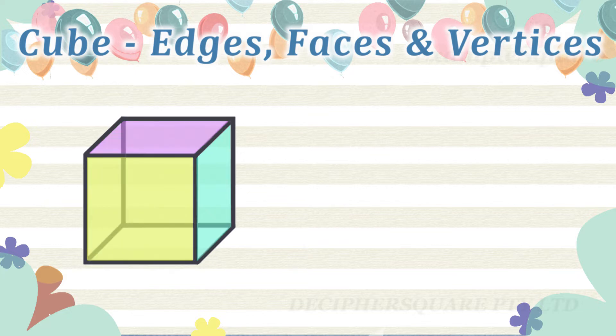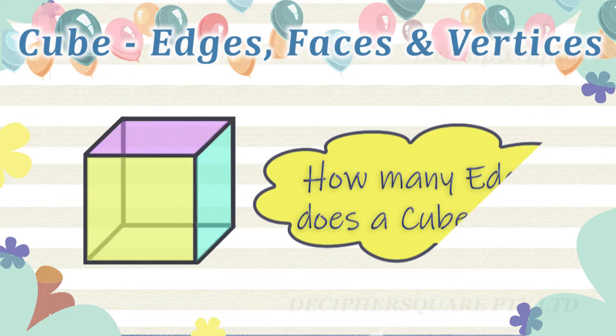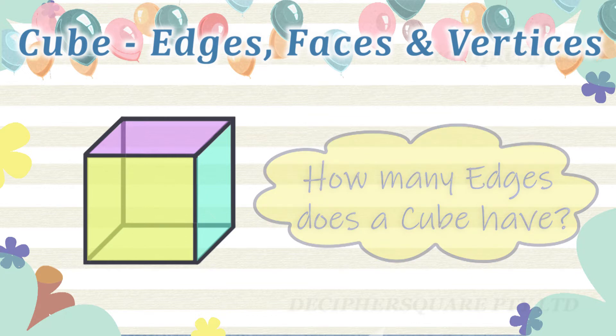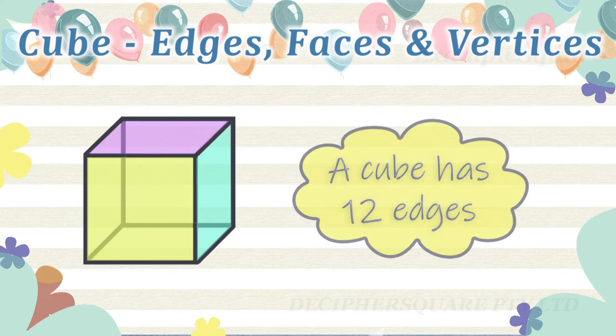How many edges does a cube have? Edges are where two faces meet. A cube has 12 edges.